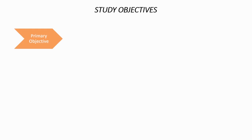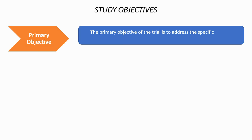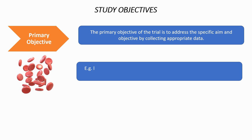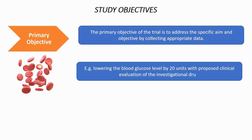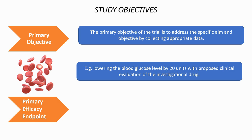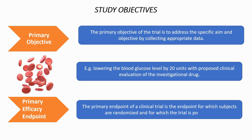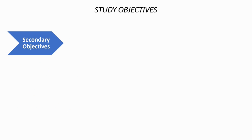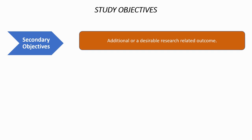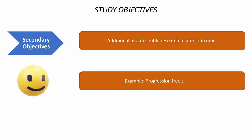Study objectives. The primary objective of a trial is to address the specific aim and objective by collecting appropriate data. For example, lowering the blood glucose level by 20 units with proposed clinical evaluation of the investigational drug. Primary efficacy endpoints help in determining the primary objective of the trial. The primary endpoint is the endpoint for which subjects are randomized and for which the trial is powered — for example, progression-free survival in cancer patients or improved quality of life.